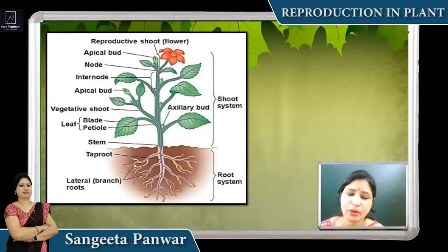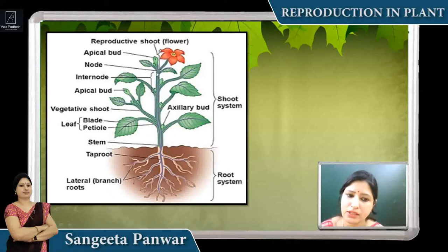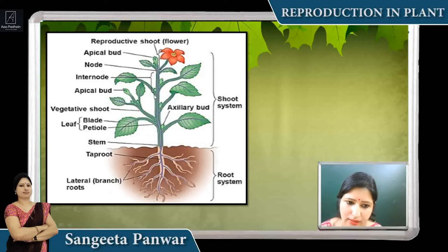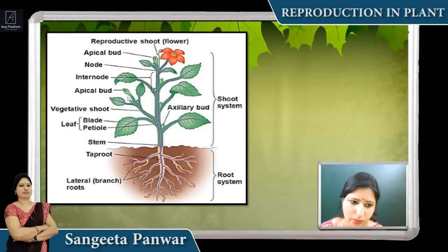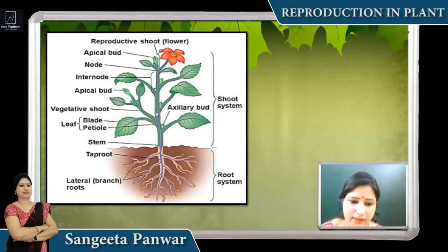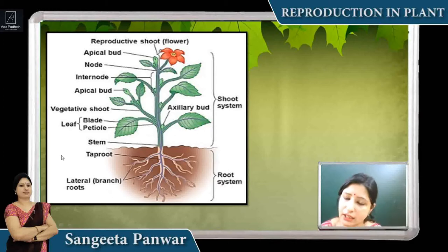Look at this picture — this is a complete picture of the flower. This is the reproductive shoot; a flower emerges from the shoot. This is the apical bud from which the flower will develop. This is the node — the point from which branches, twigs, and leaves are growing. The space between two nodes is the internode. This is the apical bud from which a flower is developing. The vegetative shoot shows the vegetative part growing. This is the axillary bud from which leaves develop. The complete above-ground structure is the shoot system, and what is below the ground is the root system.